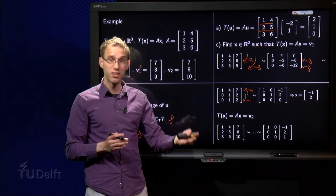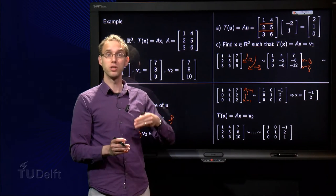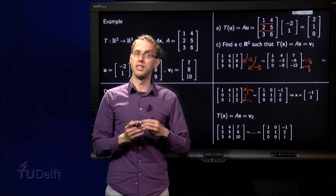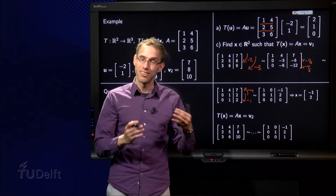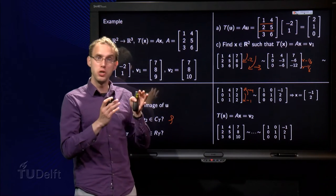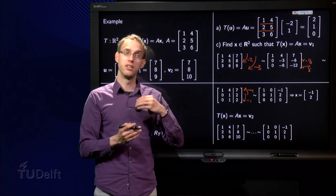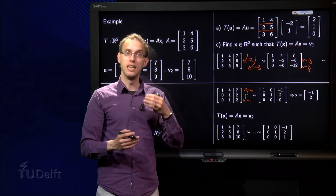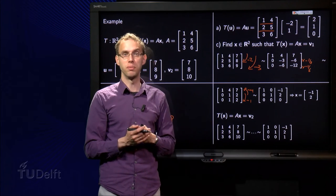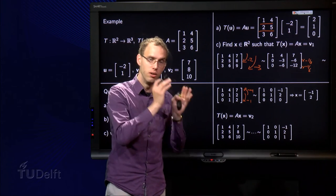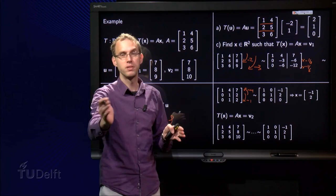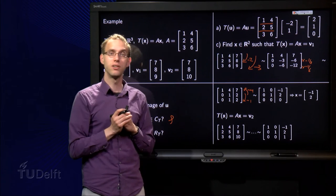But then we see something happening over there. On the last row we see 0 times x1 plus 0 times x2 equals 1, so it has no solutions. It is an inconsistent system. That means that no x is mapped to [7, 8, 10]. That means that v2 is not in the range of the transformation T, because you can find no point in the domain which is mapped to that particular point in the codomain.